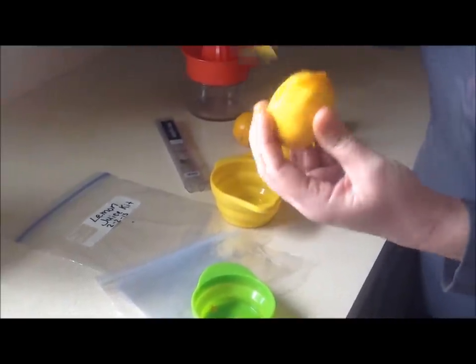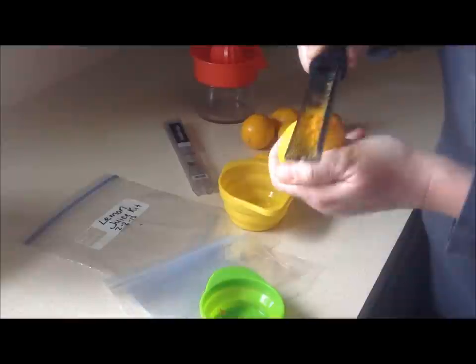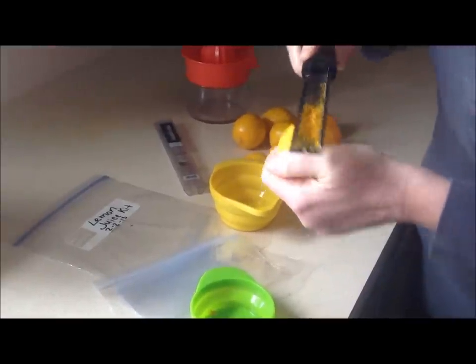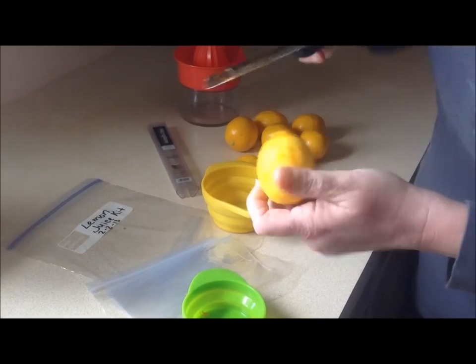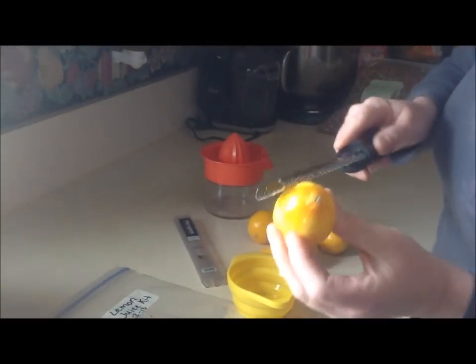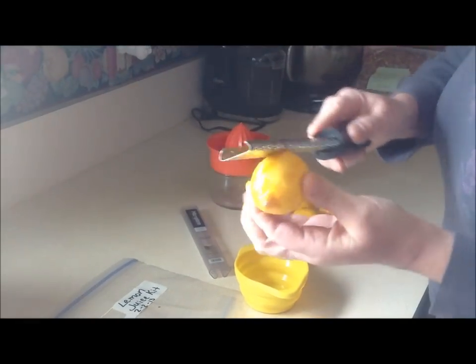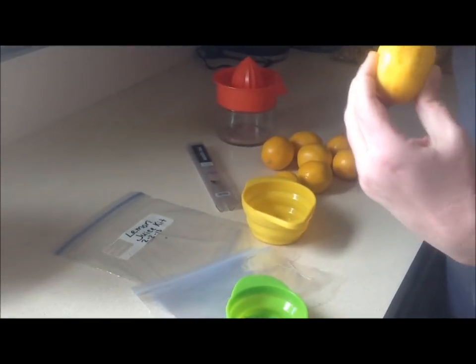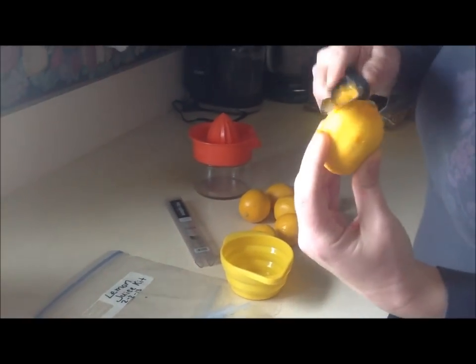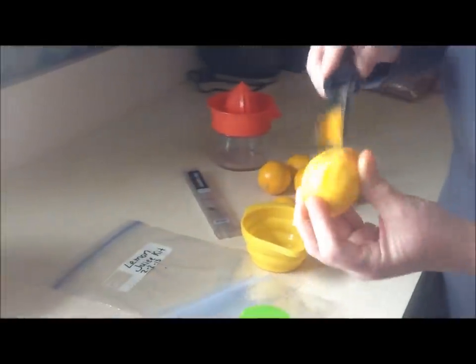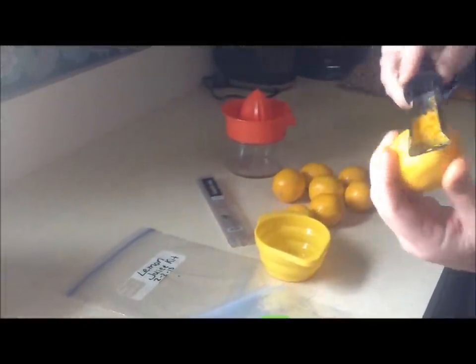The softer and riper the lemon, the more juice they will yield. The harder the lemon, the less juice, and usually the thicker the pith or the rind underneath. And that gives you less fruit for juicing. So you want to choose a lemon that's firm, not too soft, but soft, not hard.